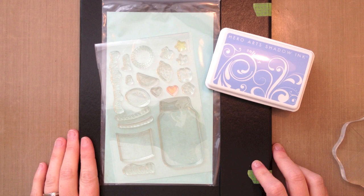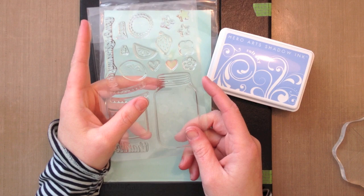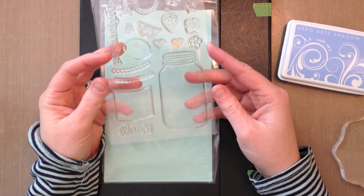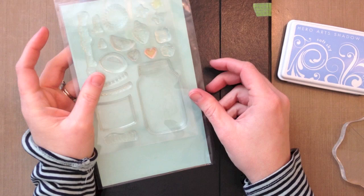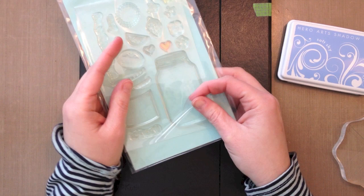Today we're going to be making a mason jar tag using the new Summertime Charm set. I'm going to be using the mason jar stamp and some of the other little elements. I apologize, my stamp set was an early stamp set so it doesn't have the image sheet sticker on there. We're going to be using the matching dies that go with this set to cut out our jar and some of our elements.